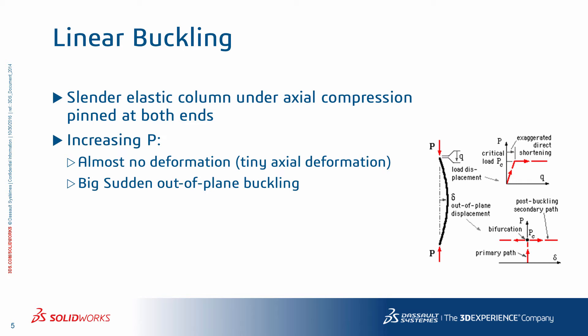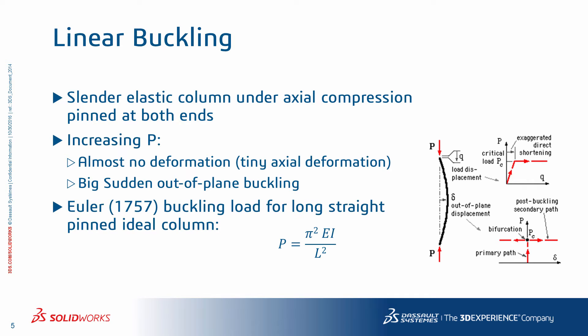At a specific level of loading called the critical buckling load, you will see a big lateral or out-of-plane displacement and instability in the system. This is important because at this point the member has failed. This was first studied by Leonhard Euler, a Swiss mathematician in the 18th century. The critical buckling load for the long straight pinned ideal column is equal to π² times the elastic modulus E of the material times the moment of inertia I of the cross-section, divided by beam length L squared.